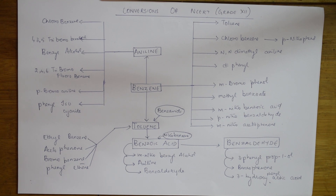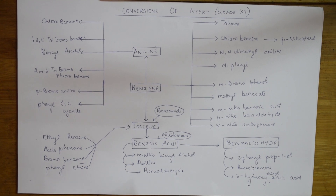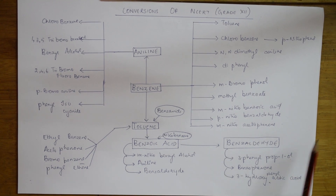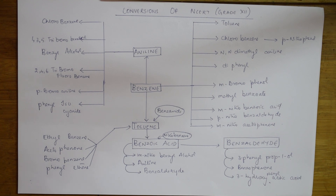This is a combination of all the chapters of your NCRT — that is haloalkanes, haloarenes, alcohols, phenols, ethers, aldehydes, ketones, carboxylic acids, and amines. Everything together, all the chapters will come under this.